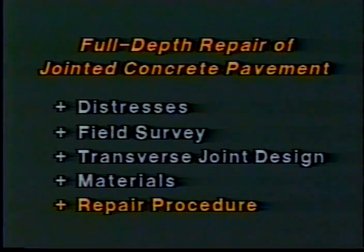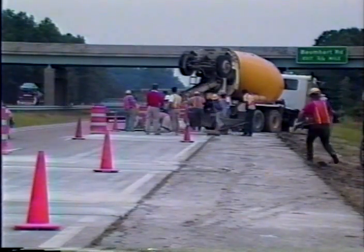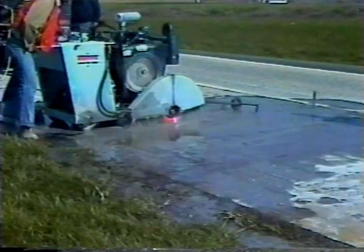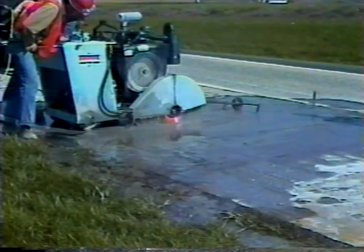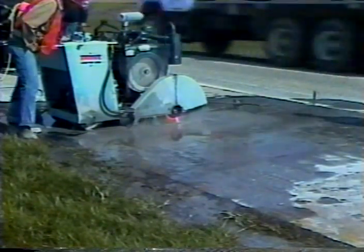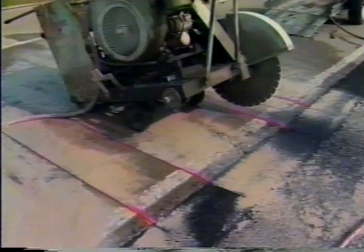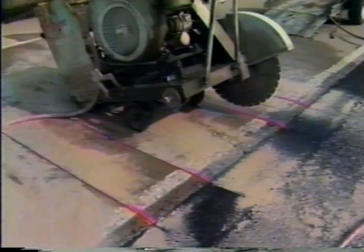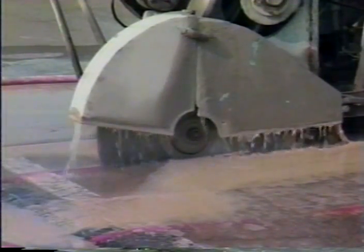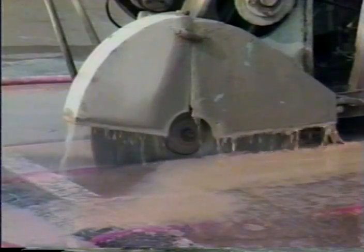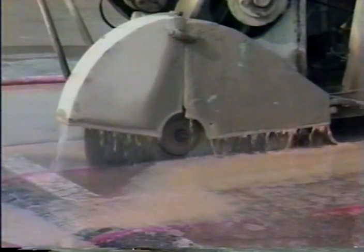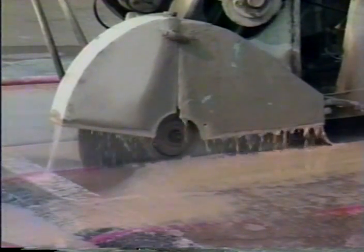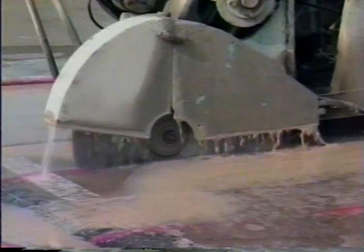Now we're ready to examine the repair procedure in detail. There are several alternatives, but you'll be shown a generally accepted procedure that has given successful results. The first step is to saw the repair boundaries full depth with diamond saw blades. On hot days, it may not be possible to make this cut without first making a wide pressure relief cut within the boundaries. A carbide-tipped wheel saw may be used for this purpose, but care must be taken not to damage the adjacent slabs or the base. This saw produces cuts with ragged edges that promote excessive spalling. Therefore, the saw cuts must be made at least 18 inches away from the repair boundaries and must not penetrate more than a half inch into the base.